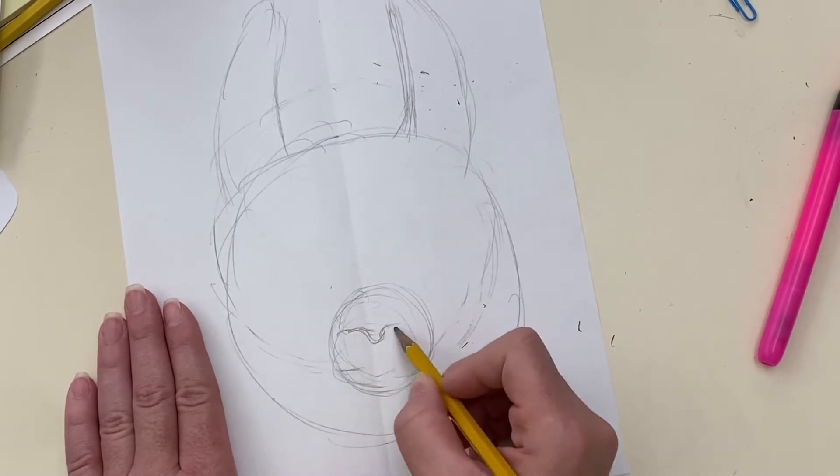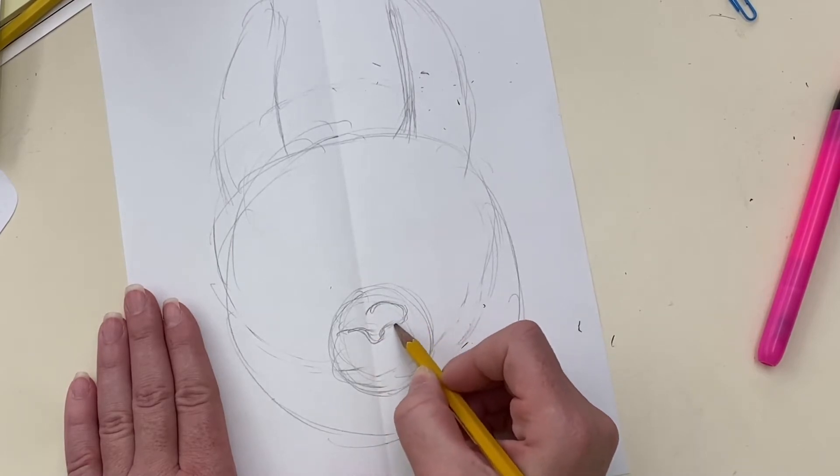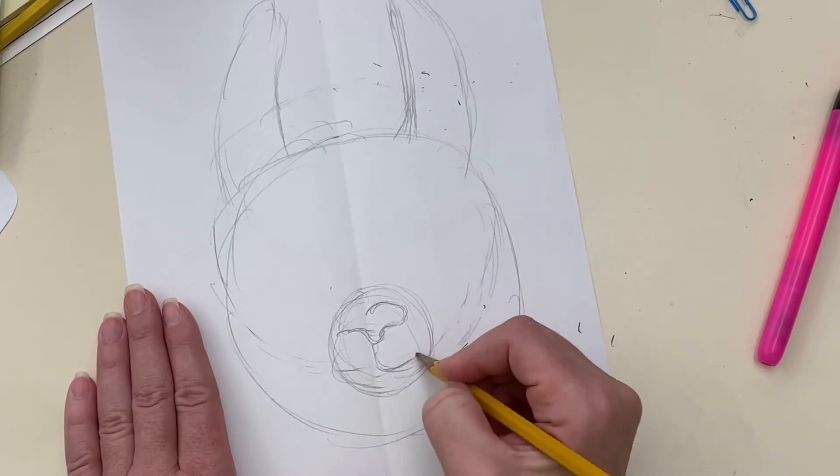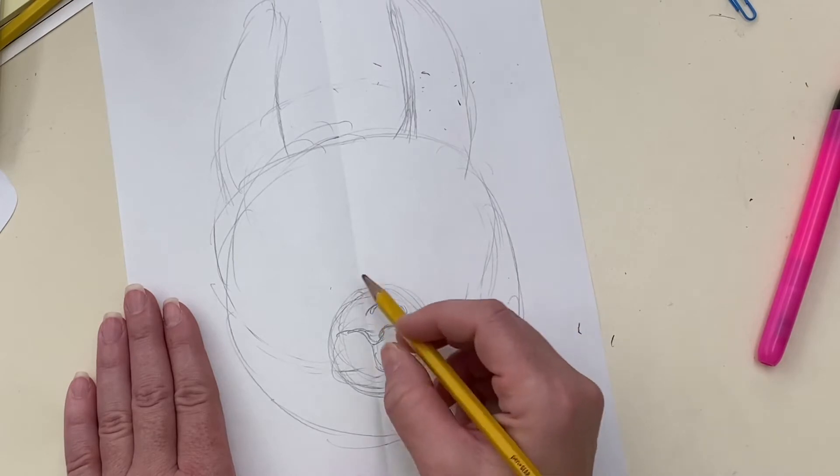For the nose I just want to make sure this side kind of looks the same. So I'm kind of drawing that side. I have my picture up. I'm looking at it constantly making sure I'm getting all the details.